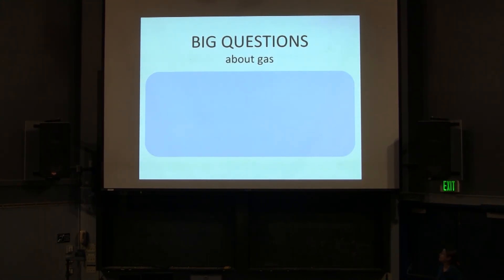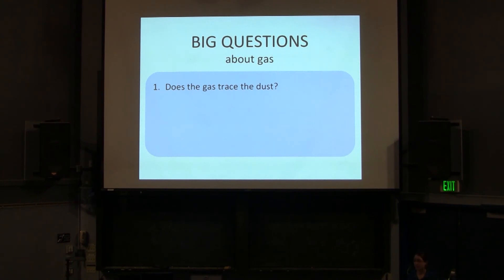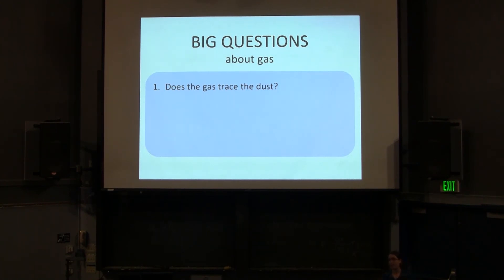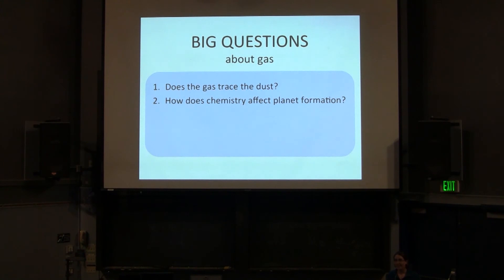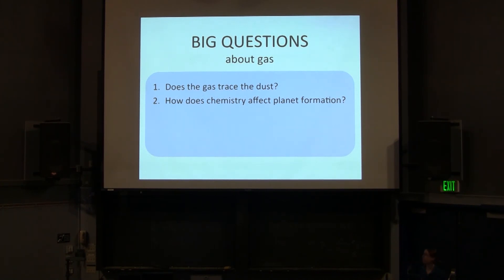What are the big questions about gas that I want to talk about today? The first is: does the gas trace the dust? Yesterday we talked about how to measure masses of circumstellar disks using dust emission, so the question is whether that's a smart thing to do. Since dust is only about 1% of the mass, if you're going to multiply by 100 to get total disk mass, you'd better know that gas and dust maintain this 10⁻² abundance throughout the whole disk. The second question is: how does chemistry affect planet formation? I'll talk about snow lines, deuterated species, and specific molecules providing insight into planet formation potential.